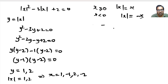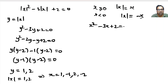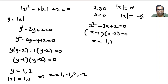This equation will split into two equations. When x is greater than or equal to 0, the equation becomes x squared minus 3x plus 2 equals 0. This factors into (x minus 1)(x minus 2) equals 0, giving x equals 1 or 2.